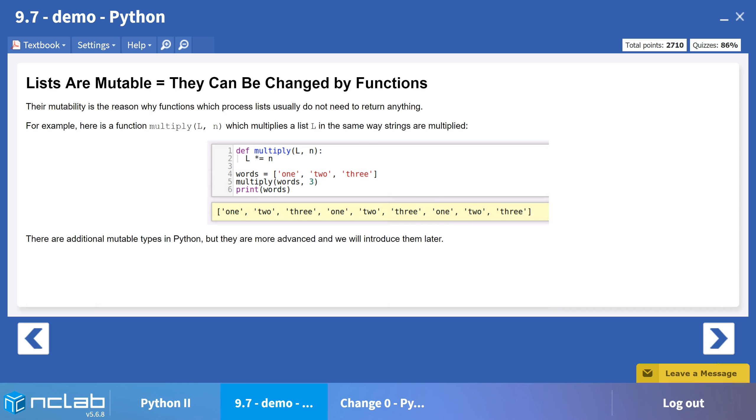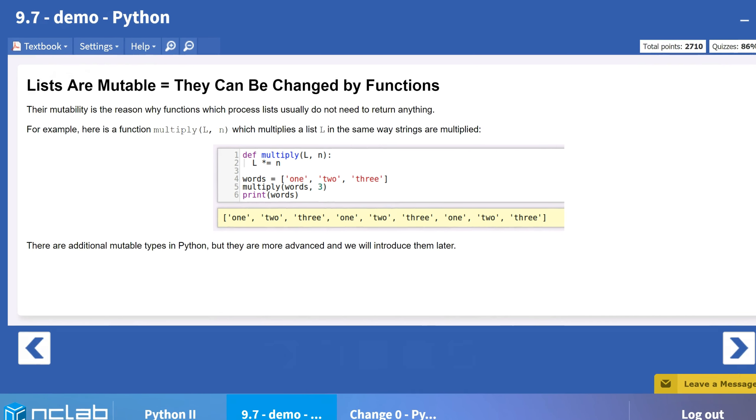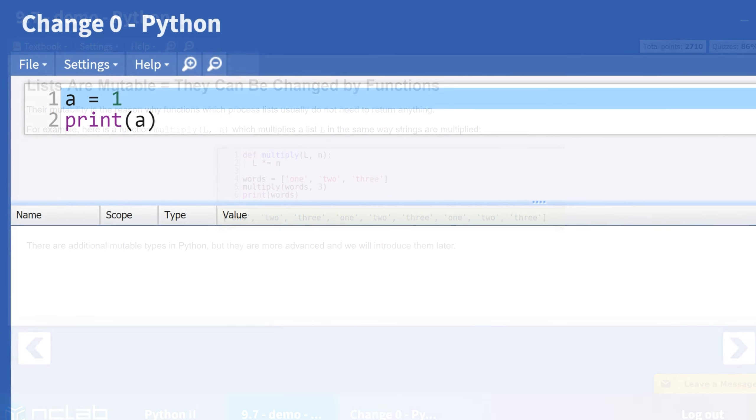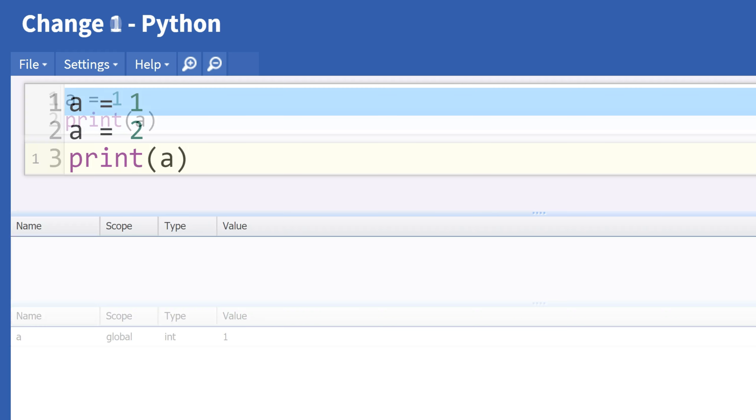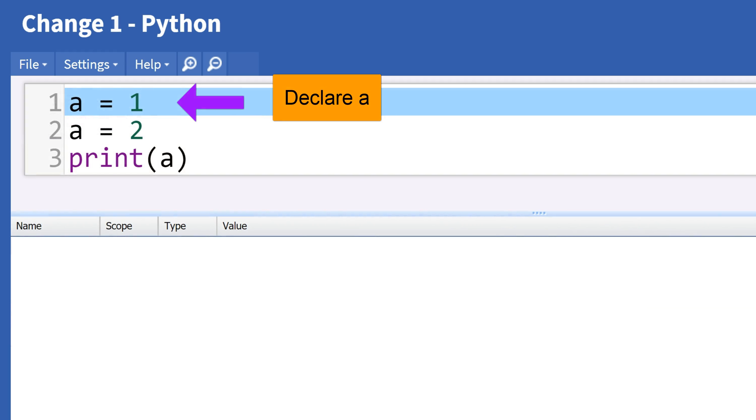For now, let's try to change immutable objects and mutable lists with functions, and check the results. We will start by assigning the integer one to variable a. We can reassign our variable to the integer two.